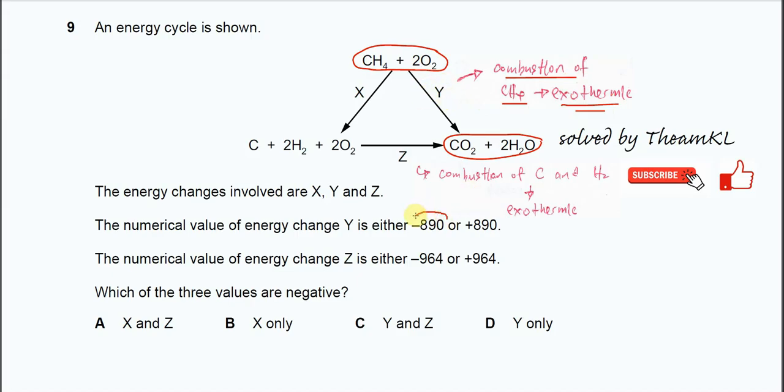So it's negative 890. Next, the numerical value of the energy change Z is either negative 964 or positive 964. The direction is from carbon, hydrogen, oxygen to form CO2 and H2O.